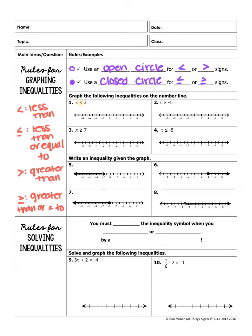So this one is x is less than 3 — just less than. Looking back at our rules, we use an open circle for less than. So I'm going to find 3 on the number line and put an open circle. Then since it's less than, we draw a line to the left. I like to remember: less than and left. So I draw an arrow pointing to the left, meaning x is less than 3.